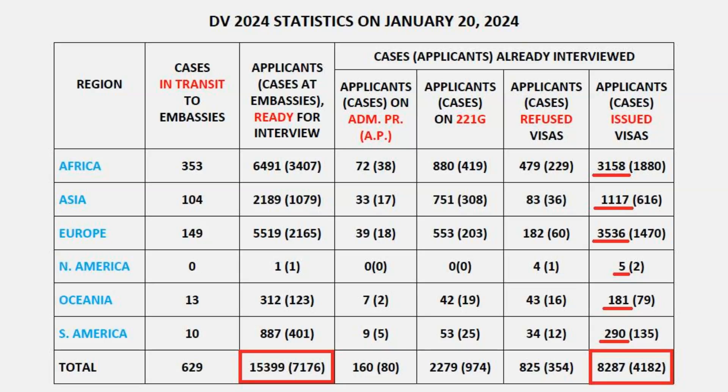The interview outcome stages show what happens to cases after they are interviewed. Either they are placed on ordinary administrative processing, or on 221G administrative processing, or they are permanently refused, or they get issued.